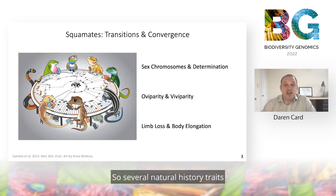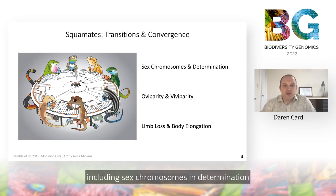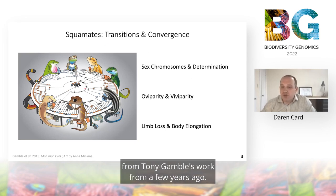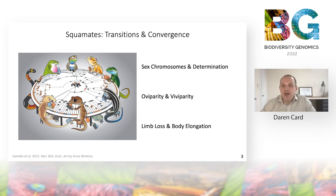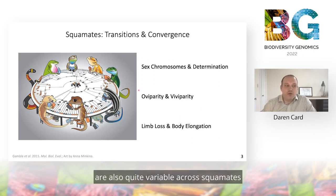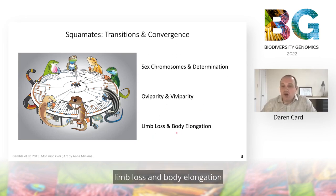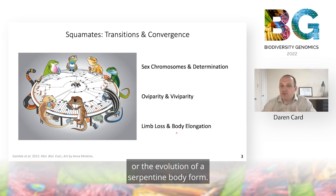I primarily investigate convergent adaptive evolution by leveraging squamate reptiles, a clade well known for large numbers of transitions and apparent evolutionary convergence. Several natural history traits readily turn over in squamates, including sex chromosomes and determination, beautifully summarized in this cover image from Tony Gamble's work. Other traits are also quite variable across squamates, including the phenotype I am most interested in: limb loss and body elongation, or the evolution of a serpentine body form.